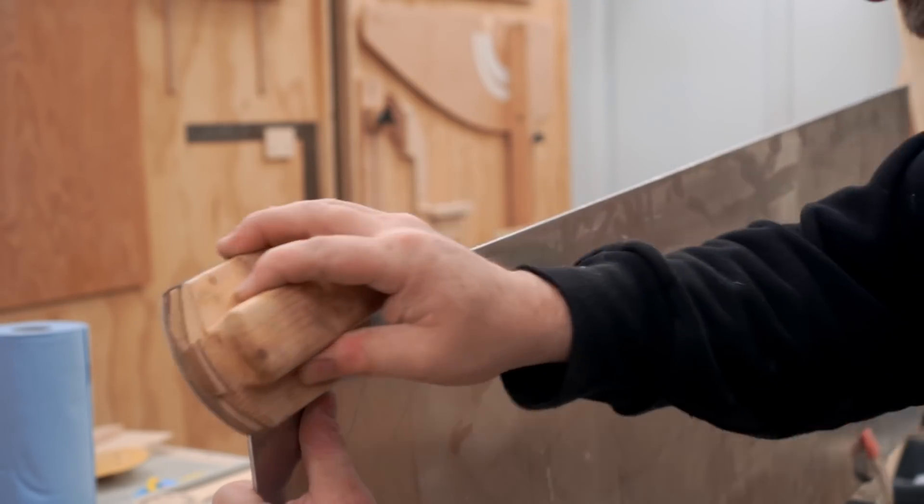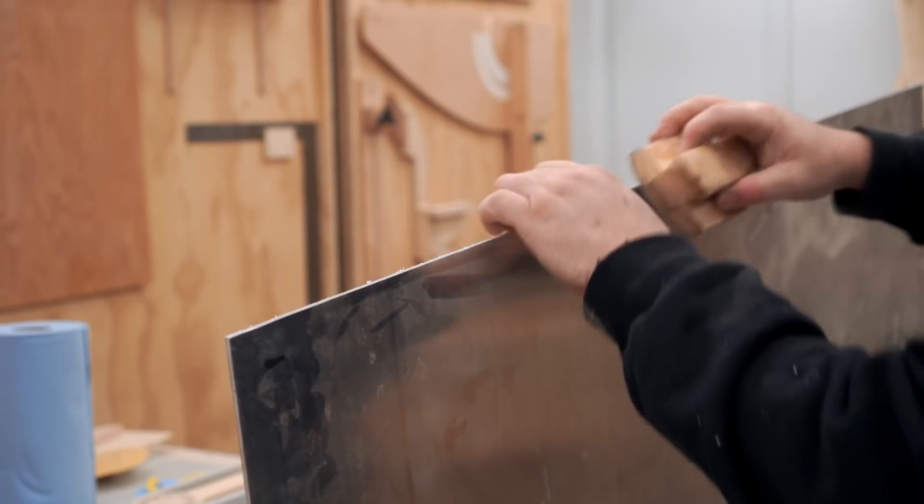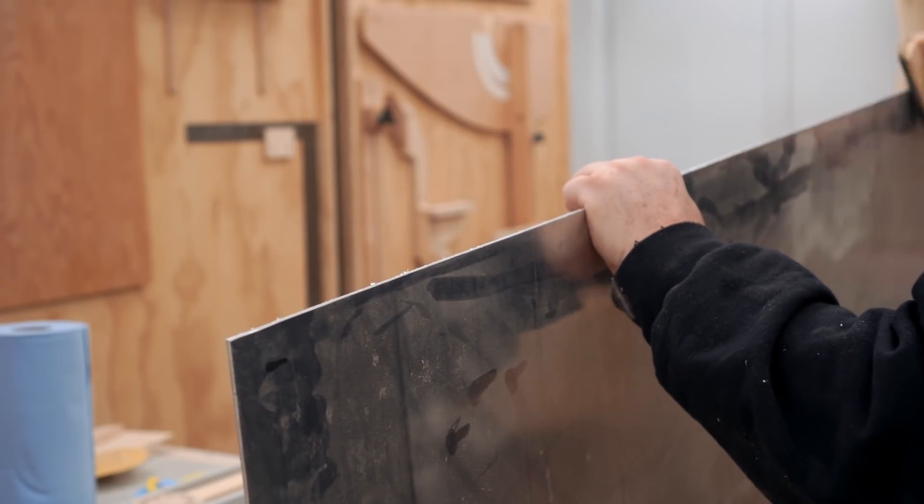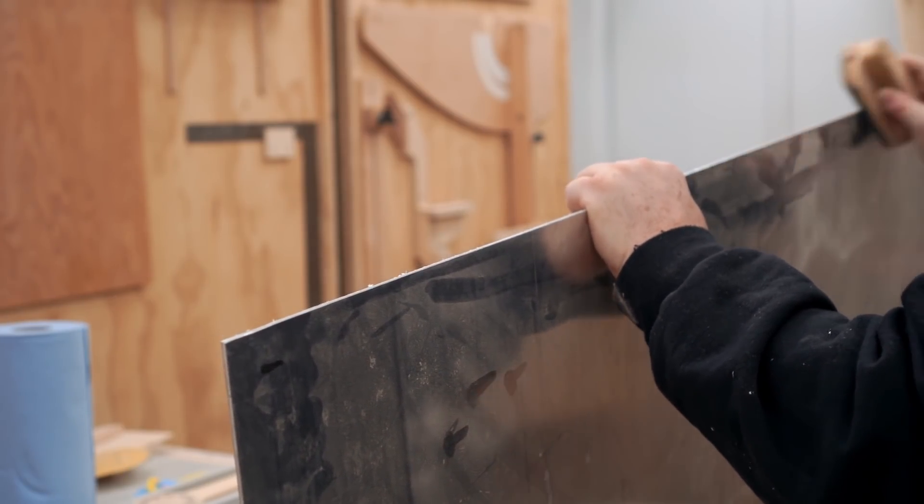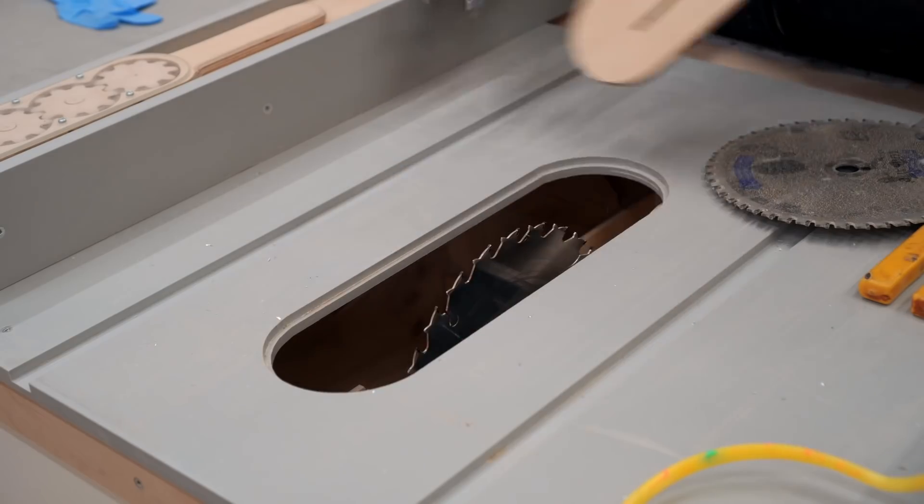The other thing that aluminum does is it leaves burrs on the edge that you really need to get rid of because the last thing you want is this hanging up while you're trying to push it through a cut.